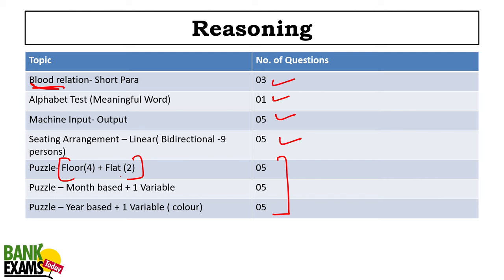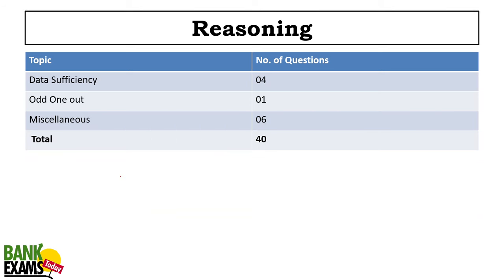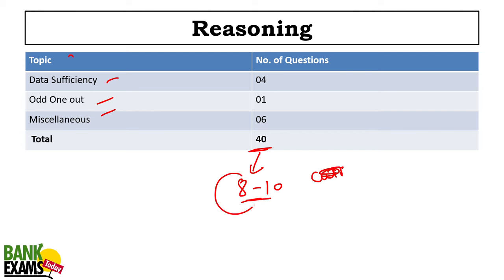Moving forward, data sufficiency had four questions, odd one out, and miscellaneous questions. Out of 40, even if you are able to score eight to ten marks, that should be the sectional cutoff — maybe even less. If you are not able to score even seven to eight marks, it would be difficult. Sectional cutoff should be around that range.